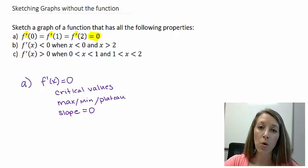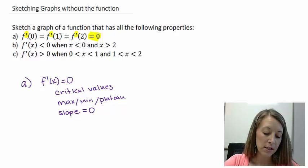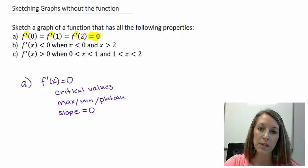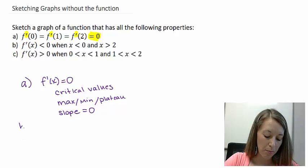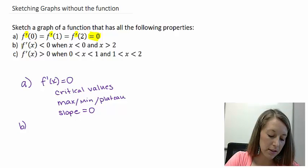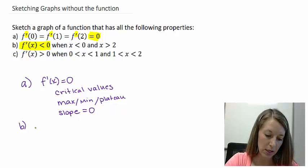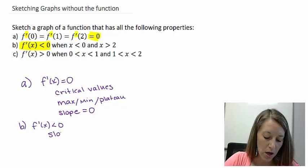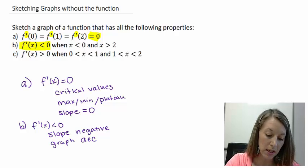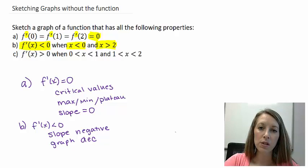When the derivative equals zero, our slope is zero, which gives us a horizontal tangent. So at x = 0, 1, and 2, we have possible maximums, minimums, or plateaus — we just need to figure out which. Part B tells us when our derivative is less than zero. Since derivatives give us slope, that tells us when our graph is decreasing — specifically when x is less than zero and when x is greater than two. So we can start to sketch a graph of this function.